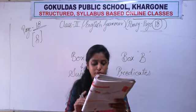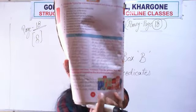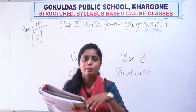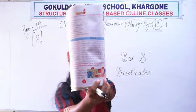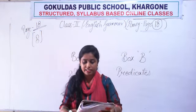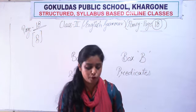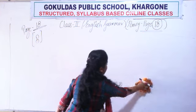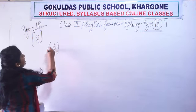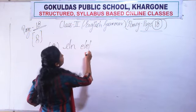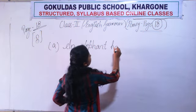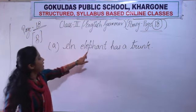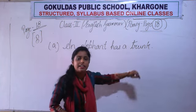In picture number A, an elephant is there — so the subject is 'an elephant.' In picture number B, the trunk is given — elephant ki jo trunk hoti hai. So we have to make the predicate part from that. An elephant has a trunk. Sentence number A is: An elephant has a trunk. What is the subject here? An elephant is the subject. And 'has a trunk' is the predicate part.